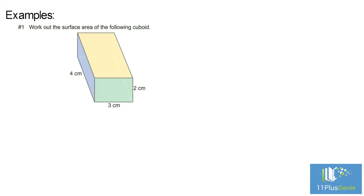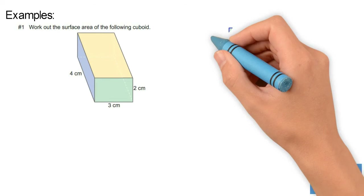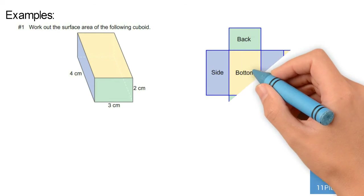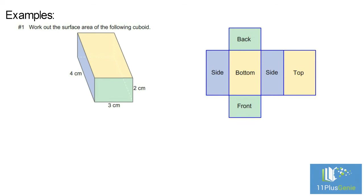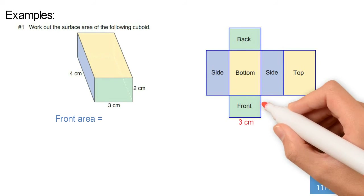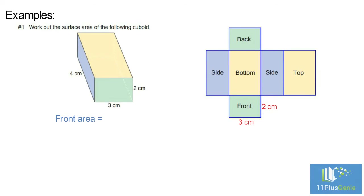To show you how to find the surface area, we will draw a net of the cuboid. The net looks like this. We can now work out the area of the front face: area equals three centimeters times two centimeters, which equals six centimeters squared.